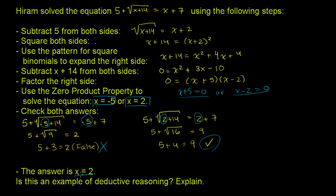And then he says that the answer is x equals 2, which is right. Now, this whole exercise, all they want us to know is, is this an example of deductive reasoning? Explain.